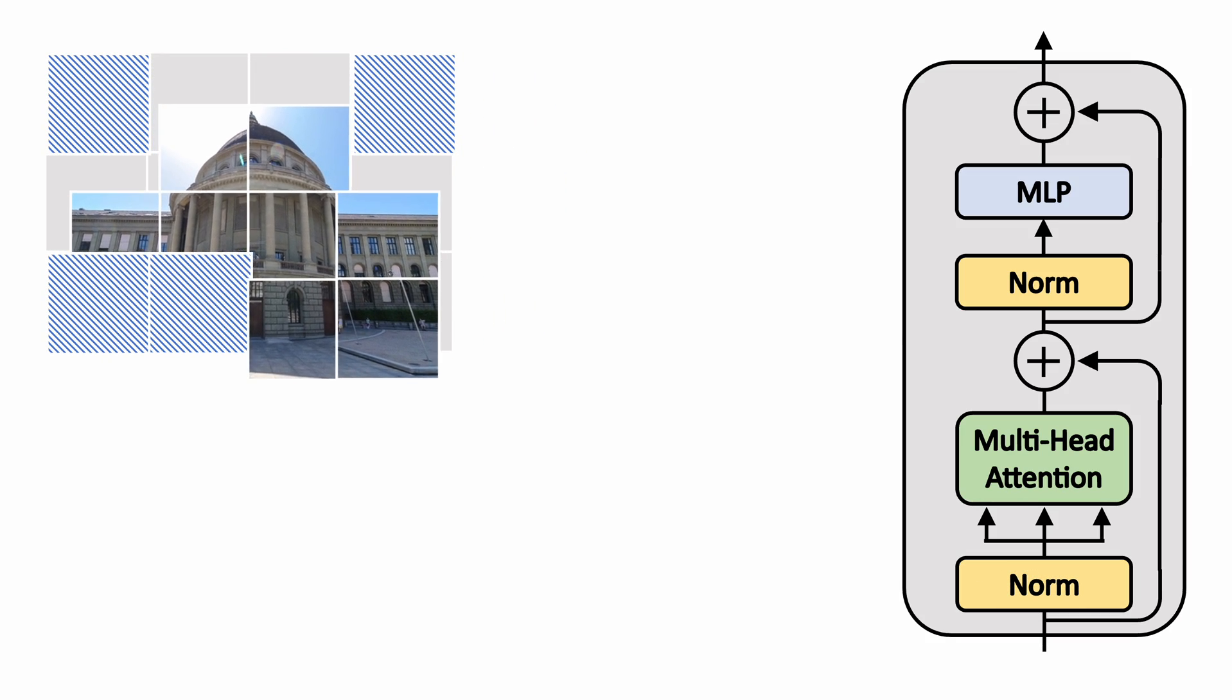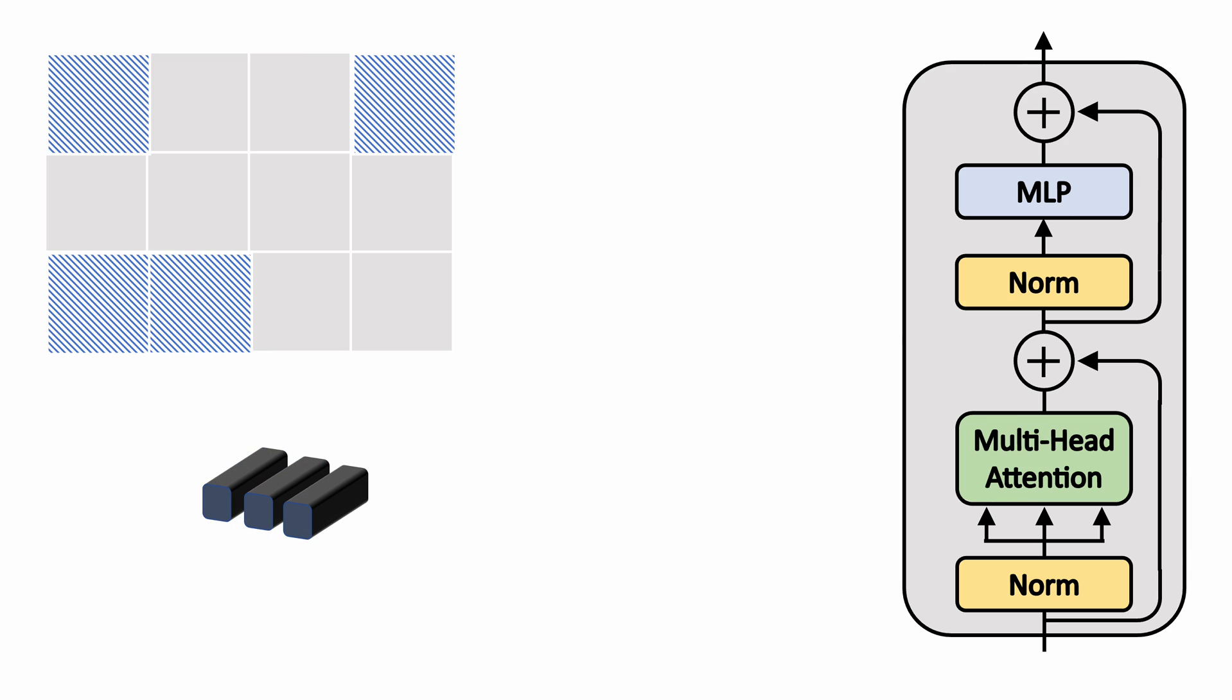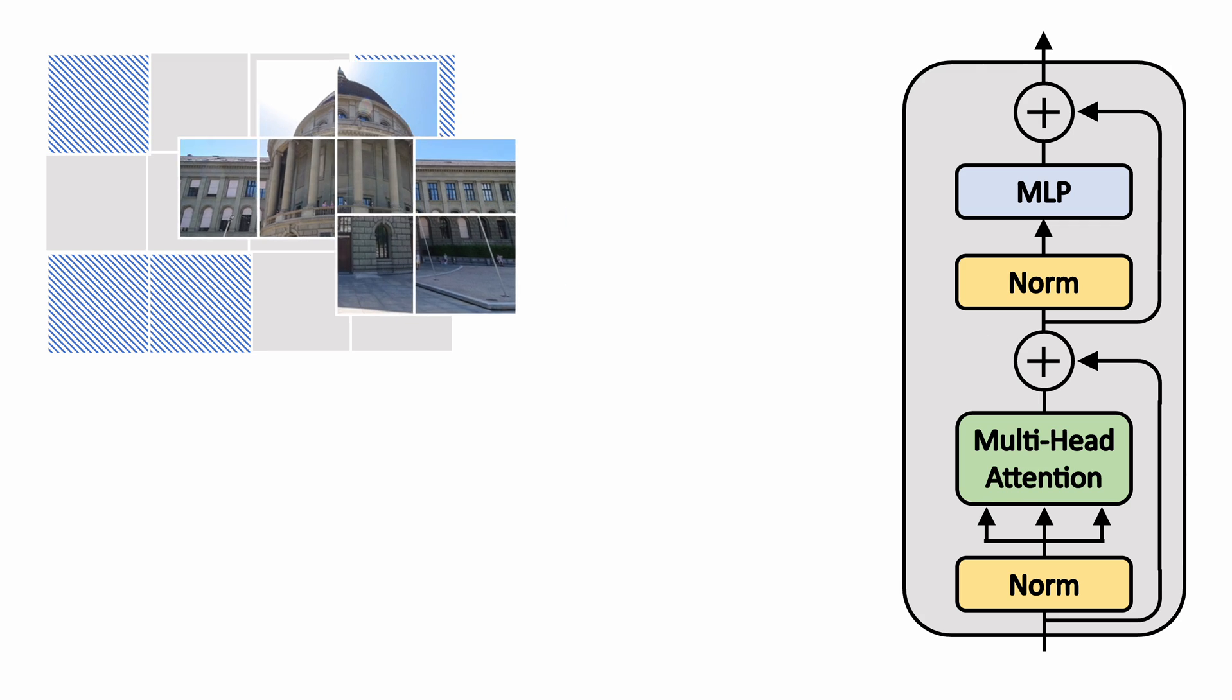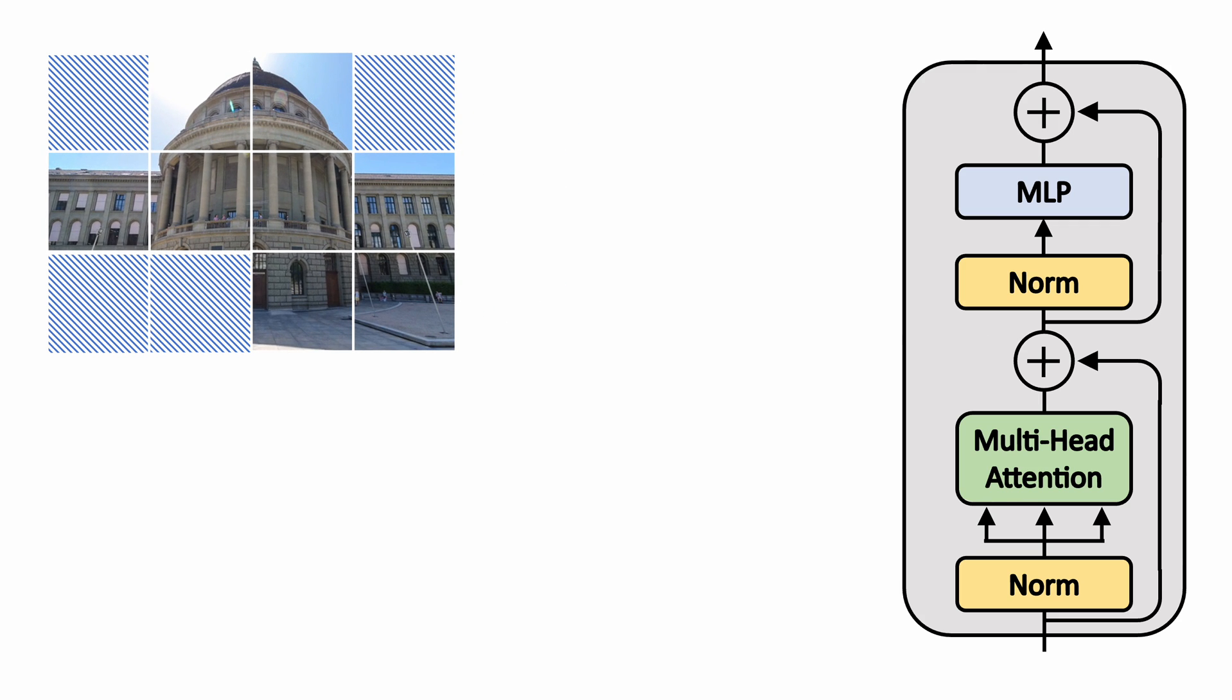These tokens are collected and reshaped to a new tensor and are passed through a VIT block. Then, the processed tokens are scattered back to their original locations in the feature map.